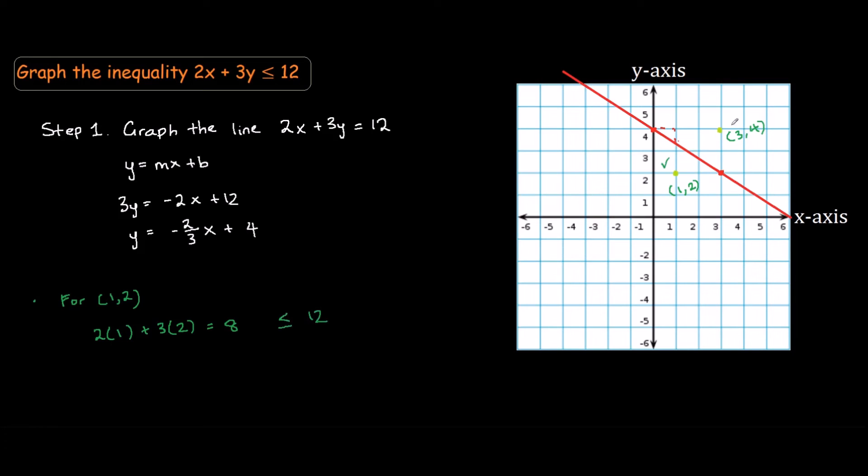If we substitute this into the inequality, we have 2 times 3 plus 3 times 4, that would be 6 plus 12 equals 18. This does not satisfy less than or equal to 12, so this side is wrong.